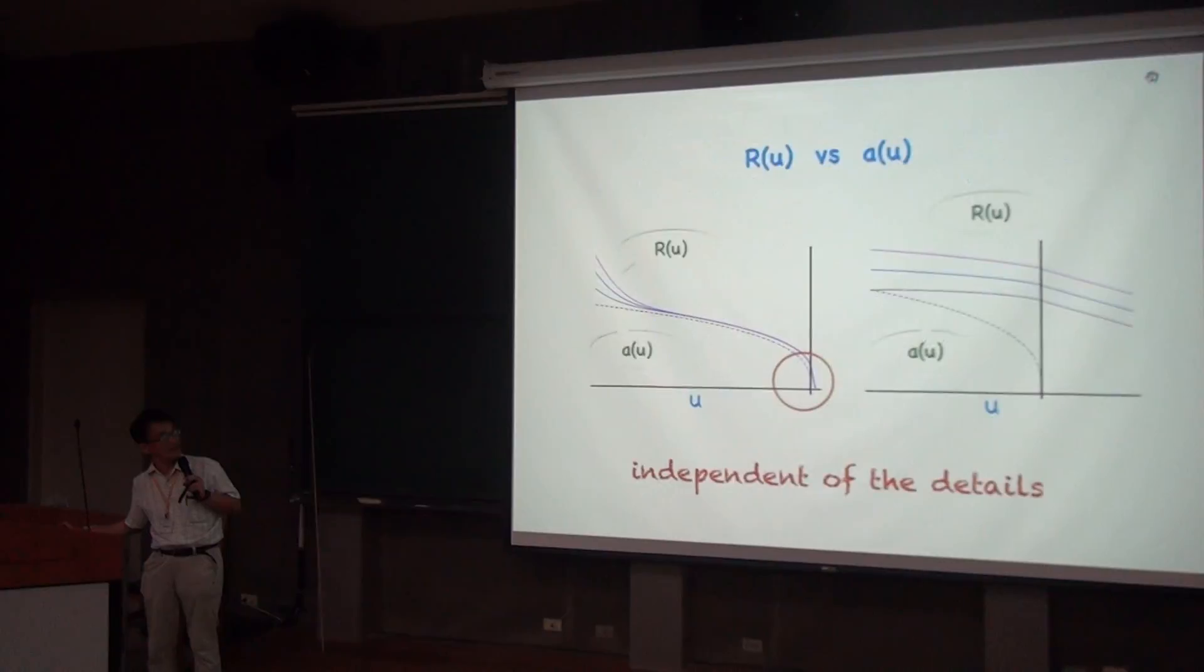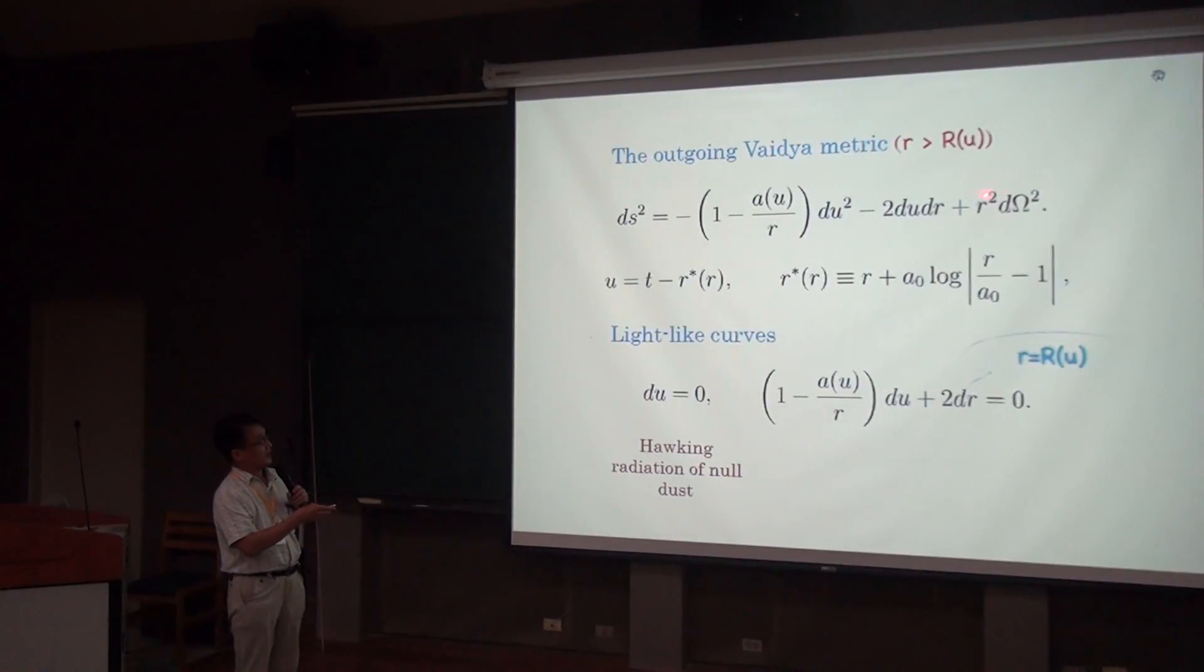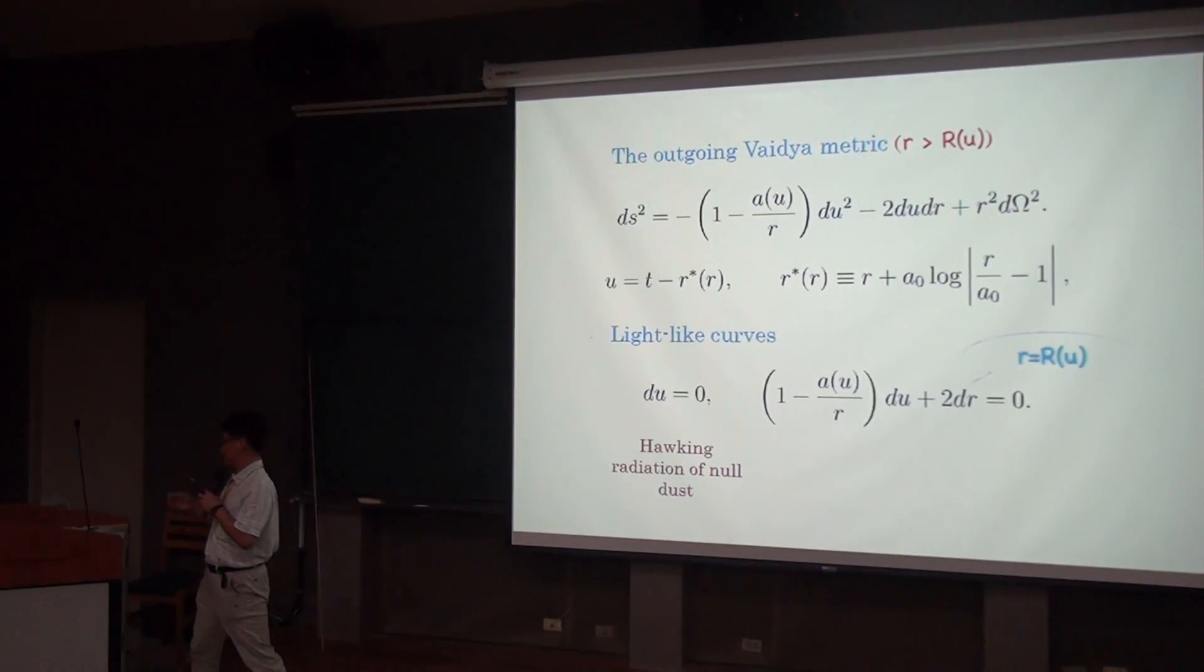Should we go back? Right, when I have R equal to A, the first term vanishes. So I get minus 2 du da, but da is ȧ dot du, right? But I mean, I thought you were just assuming that at some instant, U naught...